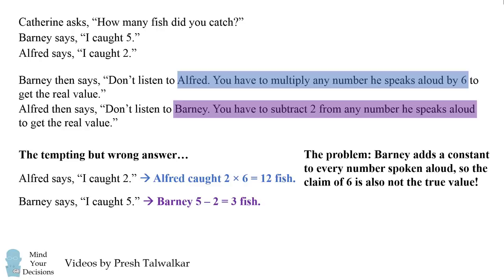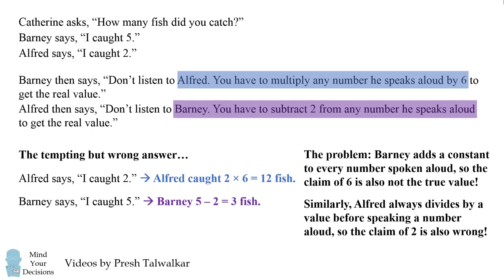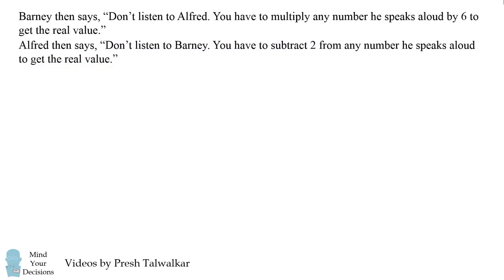The problem is that Barney adds a constant to every number spoken aloud. So even the claim of six is not the true value — that number six has also been modified by the number he adds to spoken numbers. Similarly, Alfred divides by a value before speaking a number aloud, so the claim of two is also not correct. Before you figure out how many fish each person caught, we have to figure out the correct fibbing values of each person.